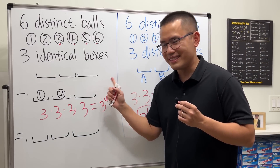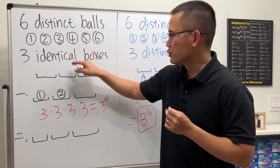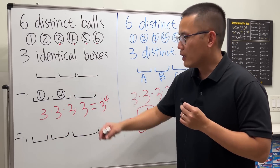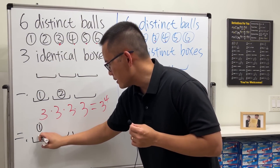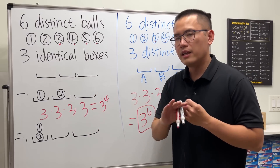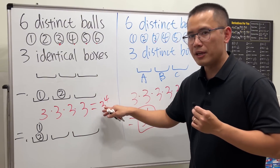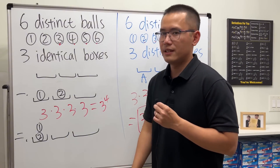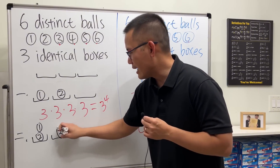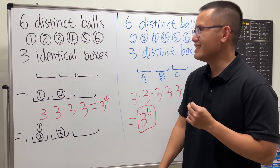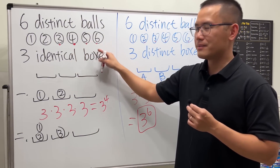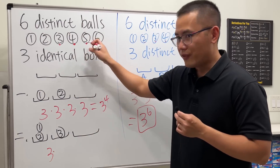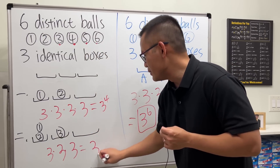For Case 2, instead of placing ball two separately, we put ball two along with ball one into the same box, and ball three into the second box. This case is completely different from Case 1 because now balls one and two are in the same box. The three boxes are again distinguishable. For balls four, five, and six, each has three choices — giving us 3 to the third power.